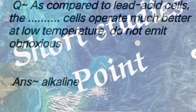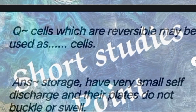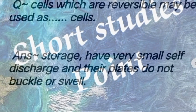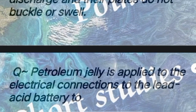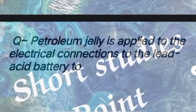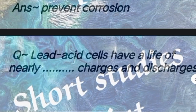Answer: Alkaline cells. Next question: Cells which are reversible may be used as storage cells — they have very small self-discharge rate and their plates do not buckle or swell. Next question: Petroleum jelly is applied to the electrical connections of the lead acid battery to answer: prevent corrosion.